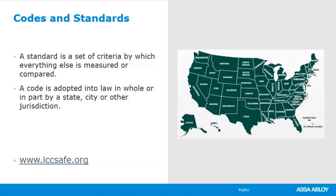The IBC has been adopted by every state in the United States in one version or another. You can check www.iccsafe.org and type in the state — it will tell you which IBC version the project falls under. There are times when you may use IBC and the life safety code. The egress calculator is designed for the IBC, very similar to NFPA 101, but this is specific for the IBC.